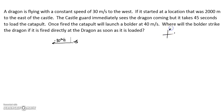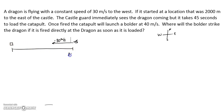We start at a location that was 2,000 meters to the east of a castle. I've got to do a brain check here — never eat shredded wheat. So here's my castle. He starts at 2,000 meters, so I'm going to call my castle zero. The castle guard immediately sees the dragon coming, but it takes 45 seconds to load the catapult.